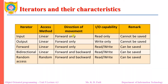The direction of movement for input, output, and forward iterators is forward, whereas the direction for bidirectional and random access iterators is forward as well as backward. Regarding input-output capability, input iterators can read data whereas output iterators can write data only, whereas forward, bidirectional, and random access iterators can read and write data. Input and output iterators cannot be saved, whereas forward, bidirectional, and random access iterators can be saved.